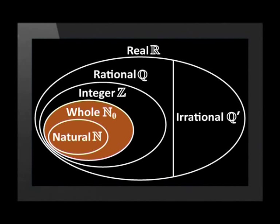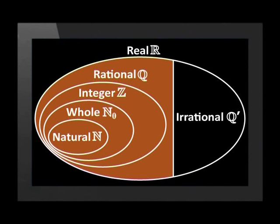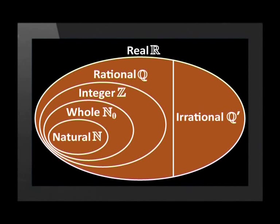Now let's look at the diagram again. It shows that all natural numbers are whole numbers, all whole numbers are integers, and all integers are rational numbers — and all of these are real numbers. To explain this more clearly: my friend Taryn was born in Cape Town, South Africa. We can say she is female and South African. Being female doesn't mean she isn't South African, and vice versa. Similarly, a natural number is also a whole number, an integer, a rational number, and a real number.